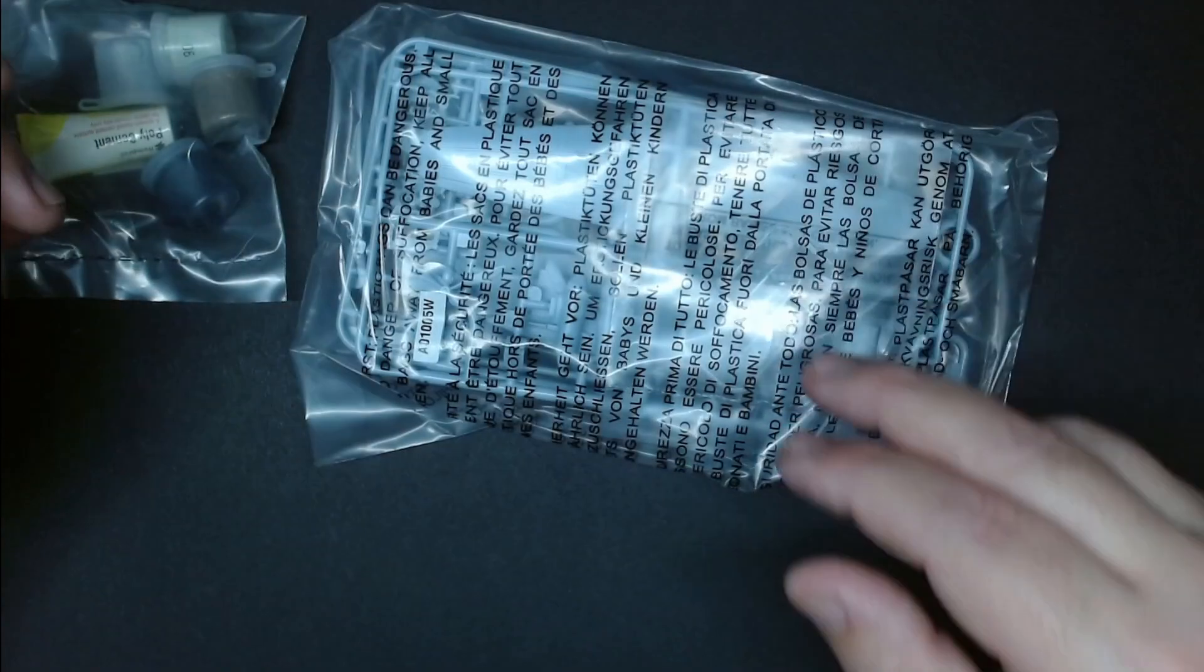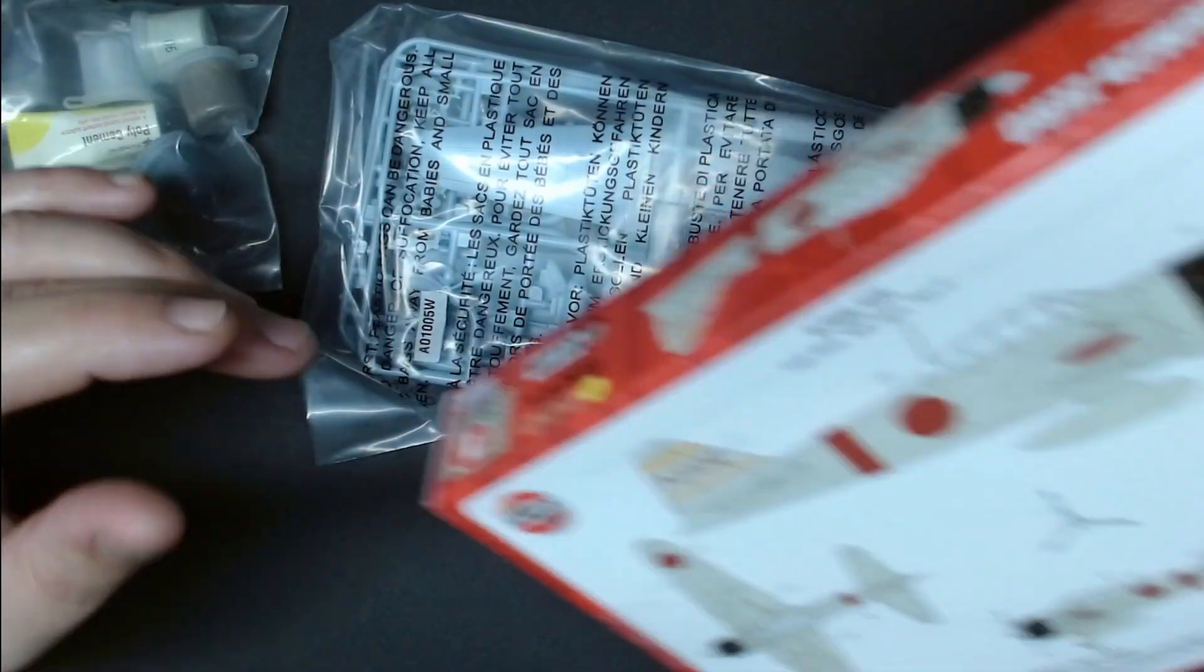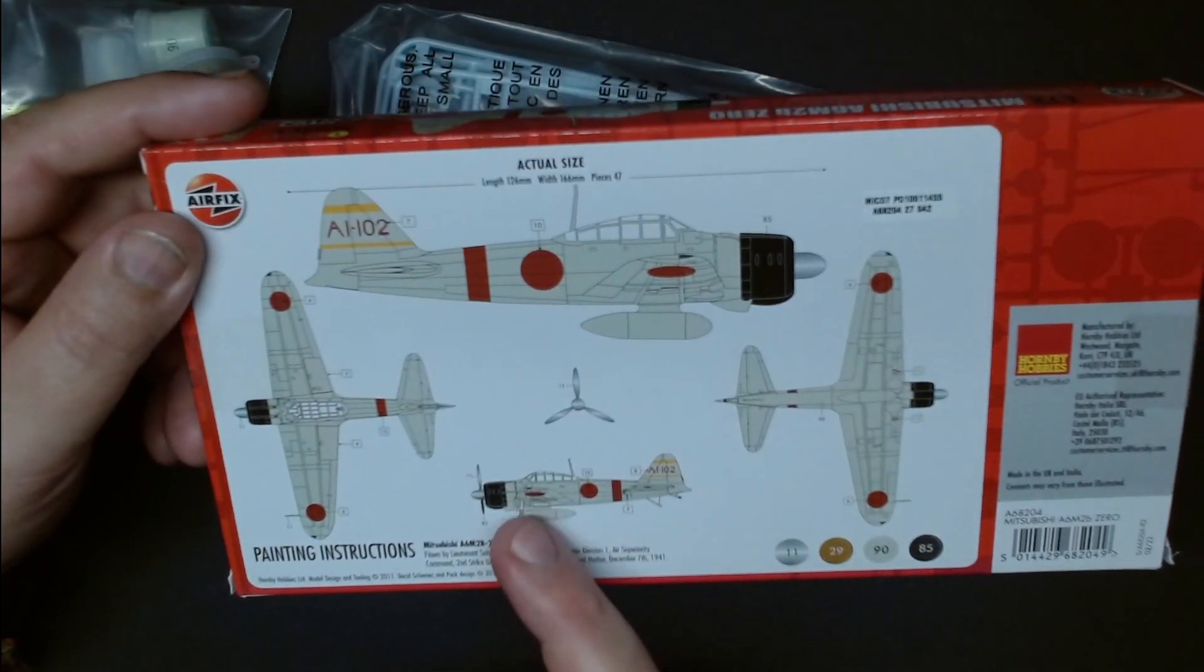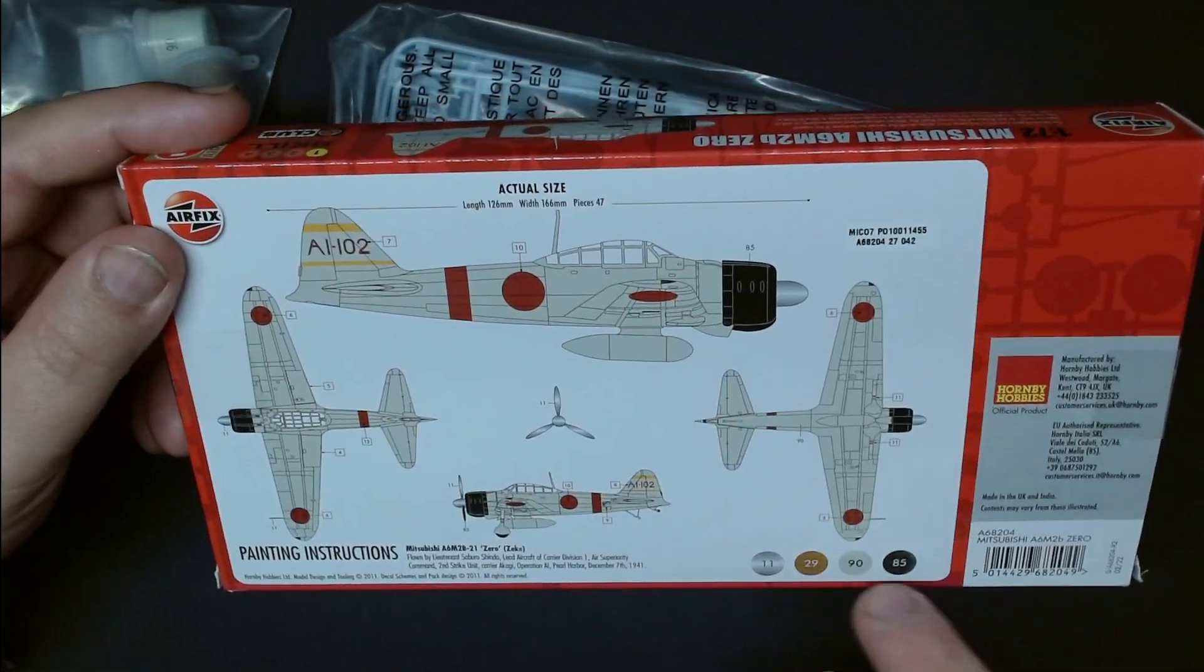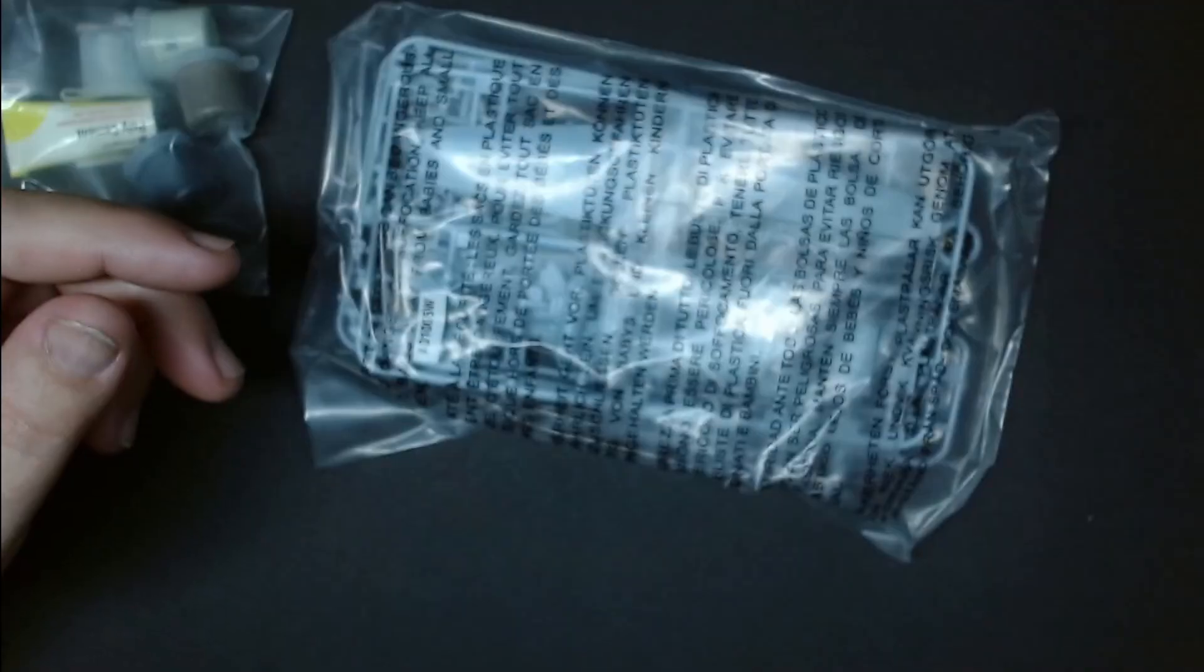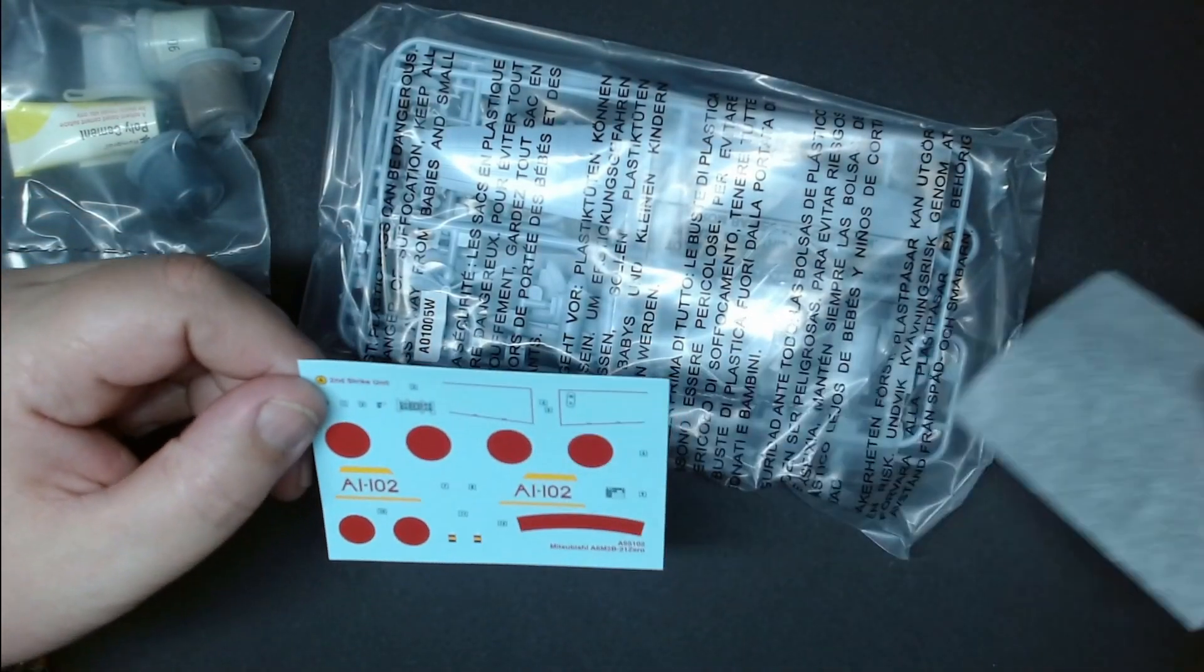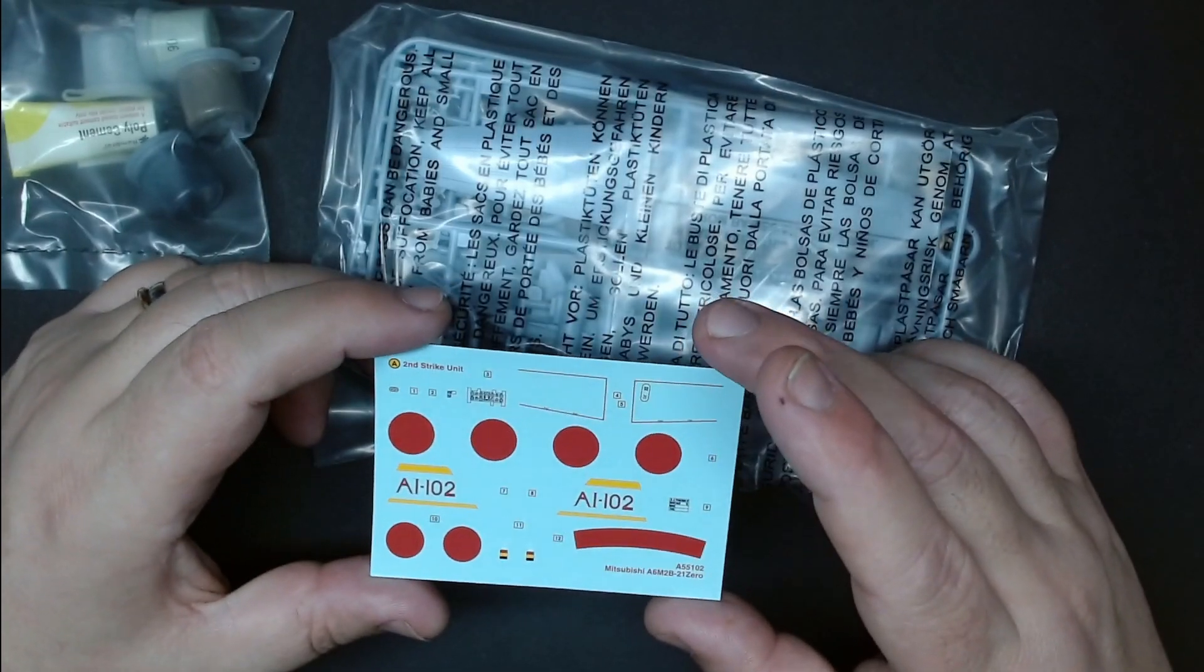We have fairly straightforward instructions, good for a new starter. The paint scheme will be on the back of the box so we don't forget to keep the box so that we can follow the paint scheme. Decals I believe they are made by Cartograph.